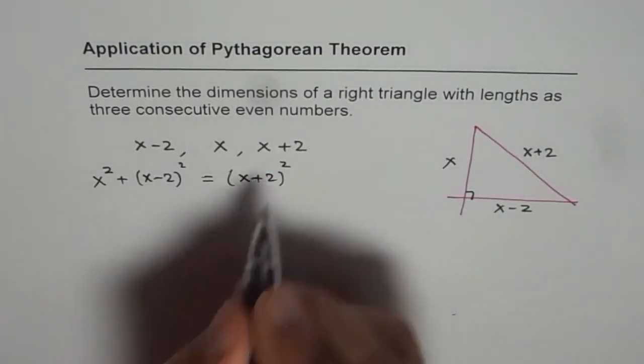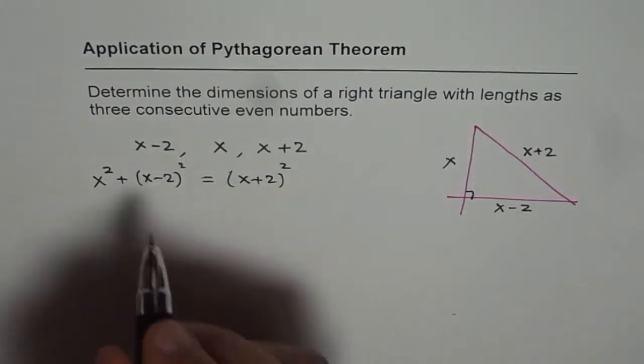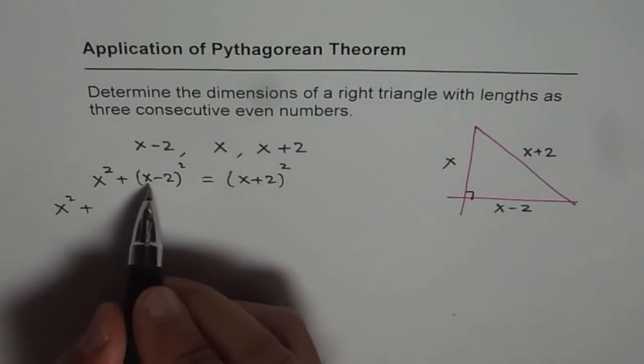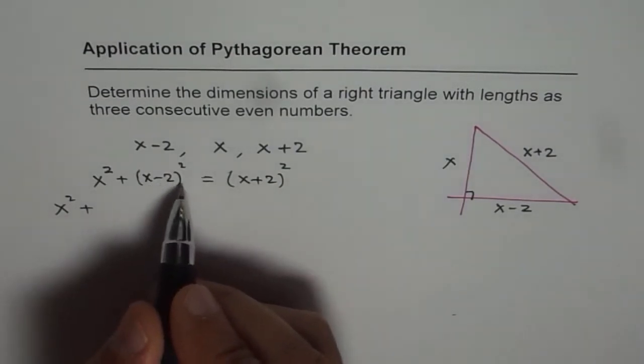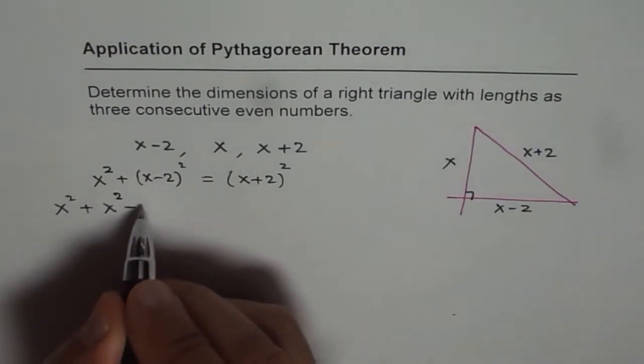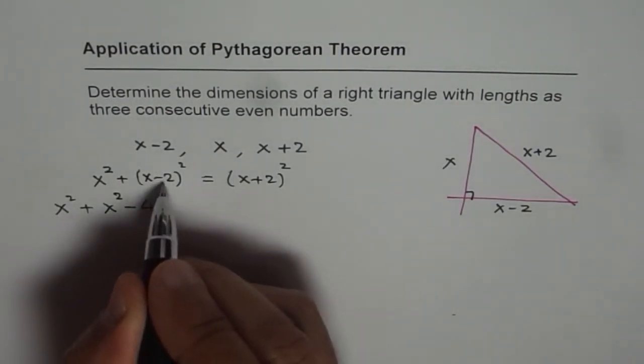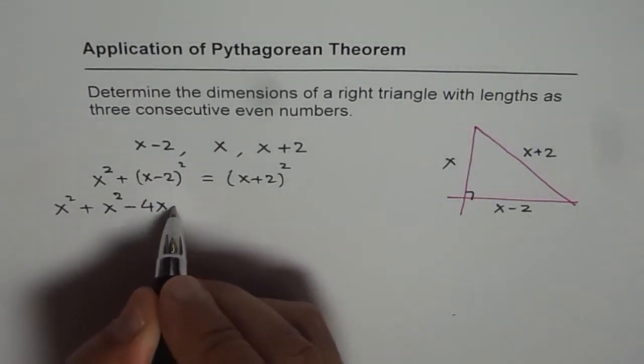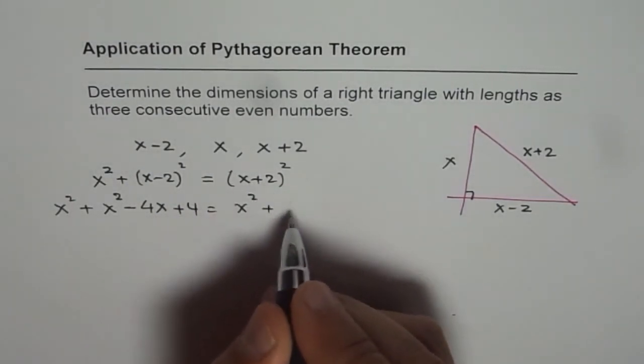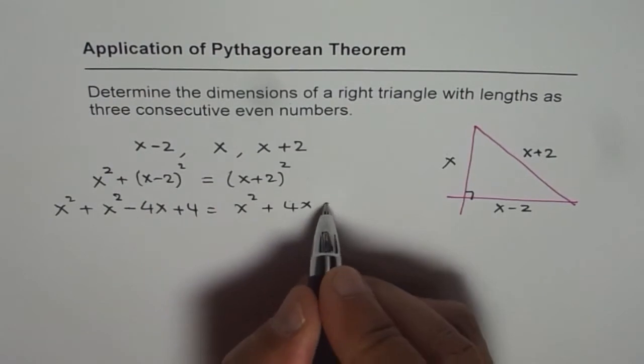And we can expand and simplify. So what we get here is x squared plus this square is multiply x minus 2 with x minus 2. You get x squared minus 2 times ab that is 4x plus b squared which is 4, equals to x squared plus 2 times ab which is 4x plus 4.